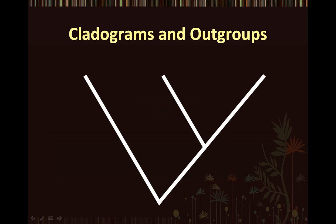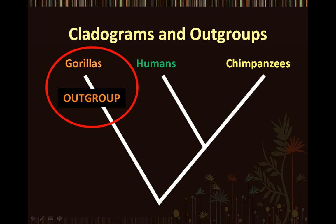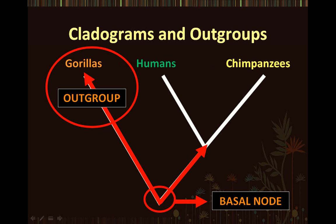If we are looking at a cladogram in which the taxa under study are gorillas, humans, and chimpanzees, gorillas would be the out-group, because gorillas diverged from the other two taxa before they diverged from each other. The out-group roots the tree and also identifies the basal node. Remember that the choice of the out-group depends on the level that we are studying; therefore, the out-group must be closely related enough to the other taxa under study to be comparable to them.